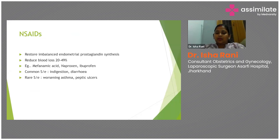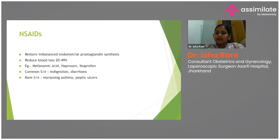NSAIDs restore the imbalanced endometrial prostaglandin synthesis and reduce blood loss by 20 to 49%. The most commonly used is mefenamic acid. Common side effects include indigestion and diarrhea. If the patient has asthma or peptic ulcer disease, NSAIDs can worsen the condition, so a detailed history regarding these is essential.